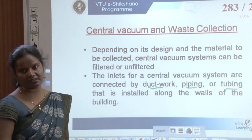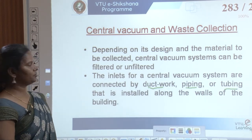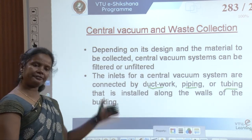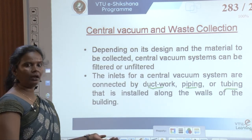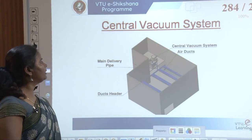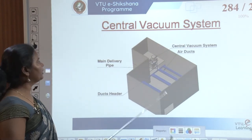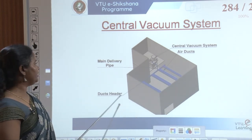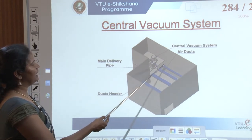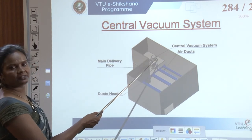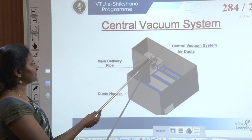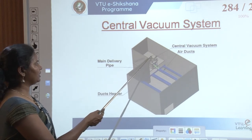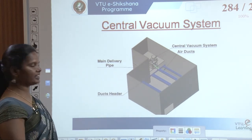In a diagram of a central vacuum system, there are duct headers, air ducts, and the central vacuum unit. Waste is disposed from collection points, collected through pipes into the central vacuum system, and from there it can be disposed.